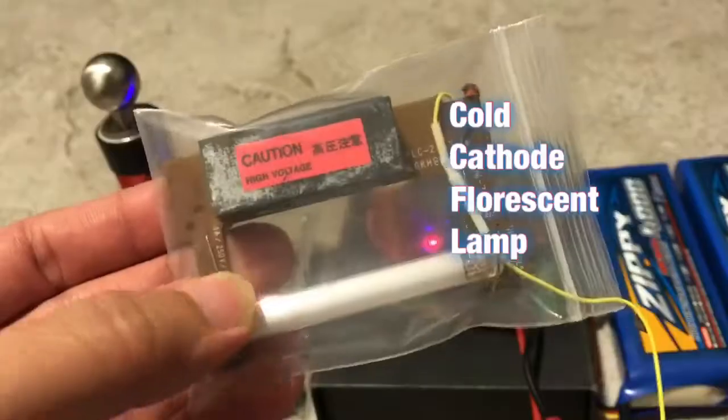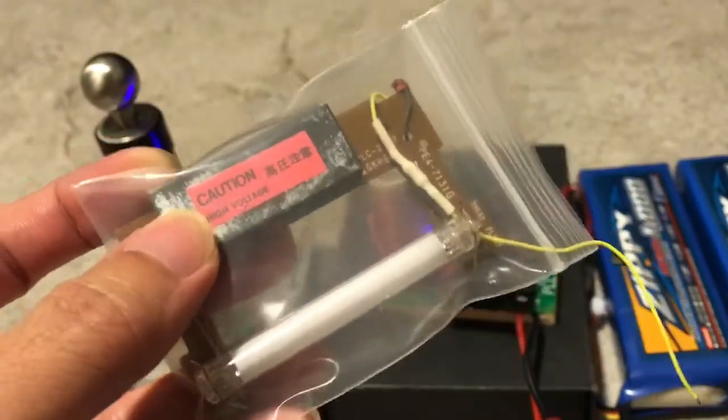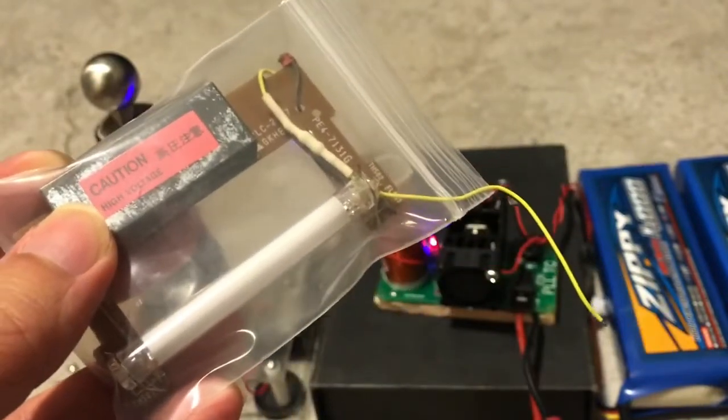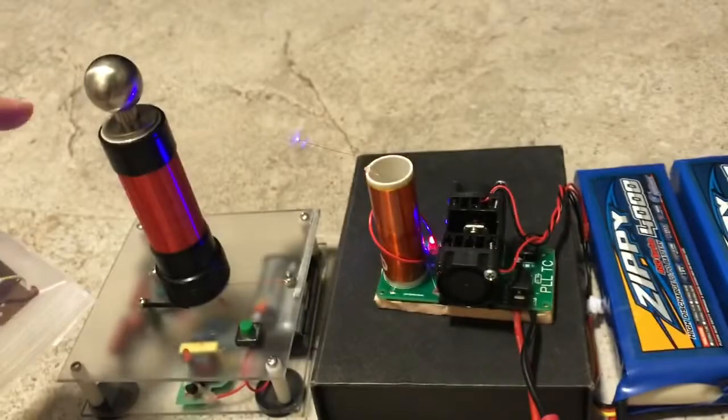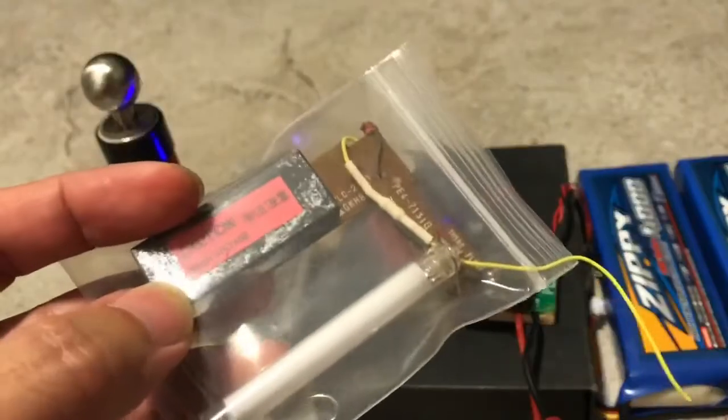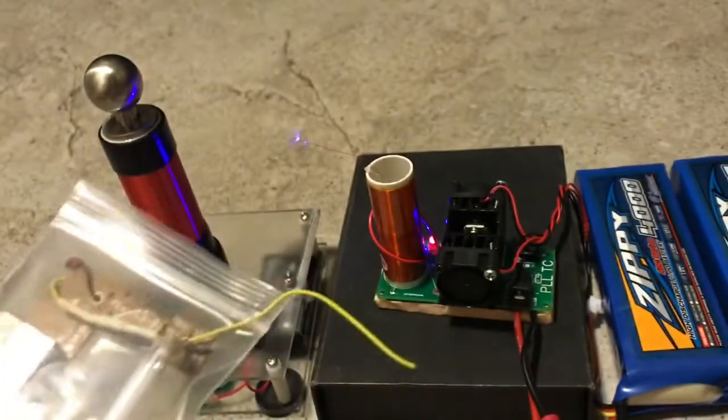That's one last trick. Remember this CCFL from my last video with this inverter? I realized that if I try to pull an arc from the DIY Tesla coil, which is pretty weak, using this inverter here I will get a pretty nice arc. Let me show you.